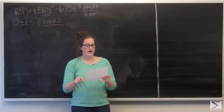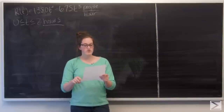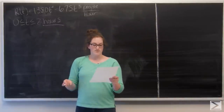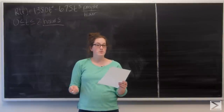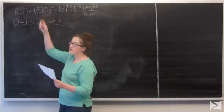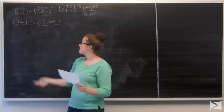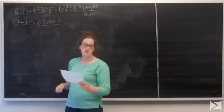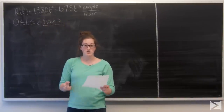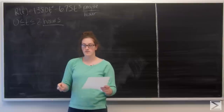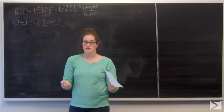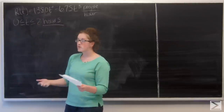Part A asks how many people are in the auditorium when the concert begins. I'm not given a function of how many people are in the auditorium, but I am given the rate at which they enter. So if I integrate r of t over the whole time interval, I'm going to get the total number of people — similar to integrating velocity to get total distance. Let's set up this integral.